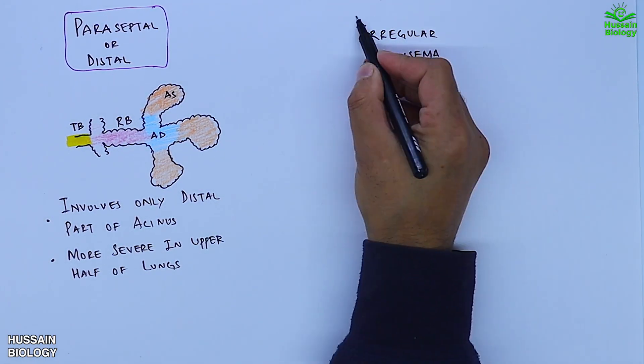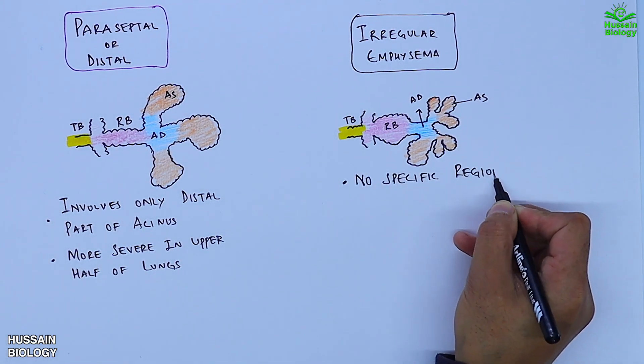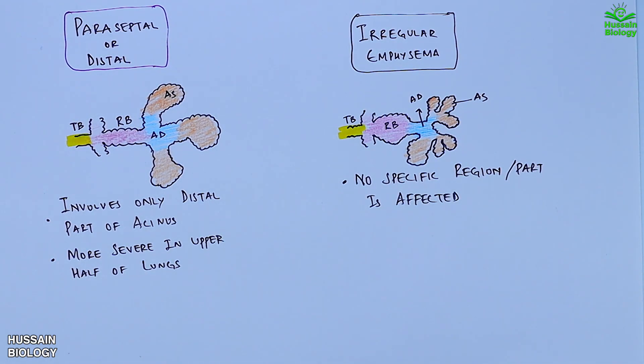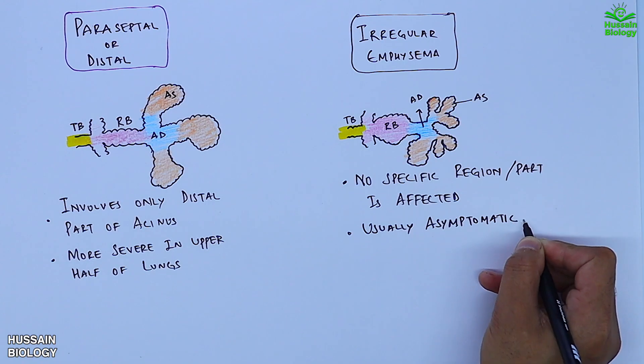The last one is irregular amphysema. As shown in the diagram, no specific regions in the acinus are affected. It can affect sacs, bronchioles, or any other region. It's a random kind of amphysema and this is asymptomatic.